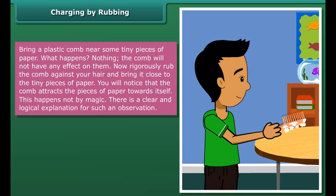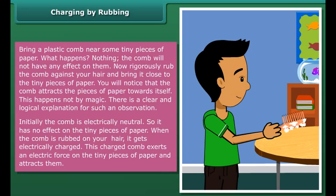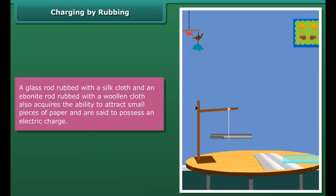Lightning is caused by the accumulation of charges in the clouds. Charging by rubbing: bring a plastic comb near some tiny pieces of paper — nothing happens, the comb will have no effect on them. Now rigorously rub the comb against your hair and bring it close to the tiny pieces of paper. You will notice that the comb attracts the pieces of paper towards itself.